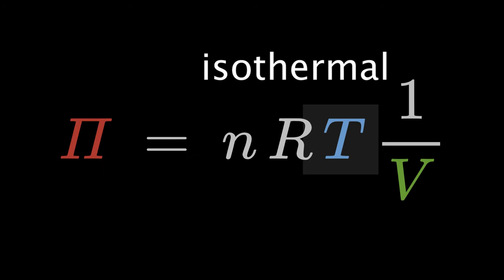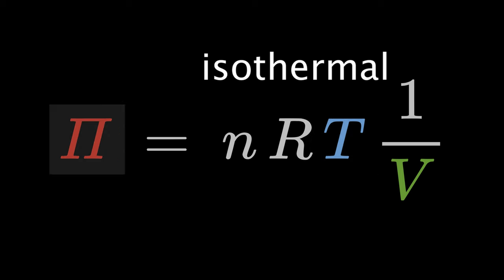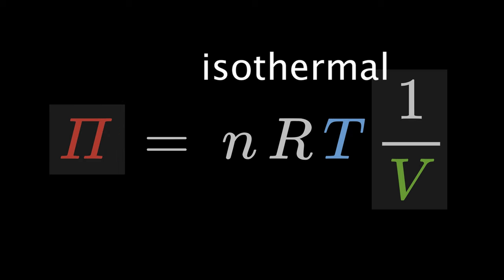During an isothermal process, the temperature T of the gas remains constant. This means that the pressure pi is proportional to the inverse volume, 1 over V.